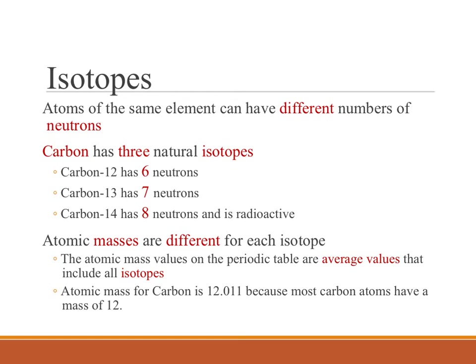Now, getting to why the atomic mass had decimal points, the atoms of a same element can have different numbers of neutrons present, and so that's going to affect our mass numbers.